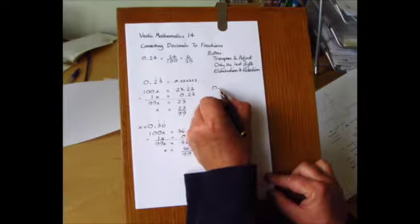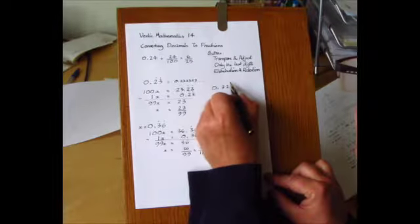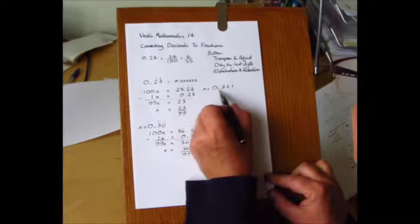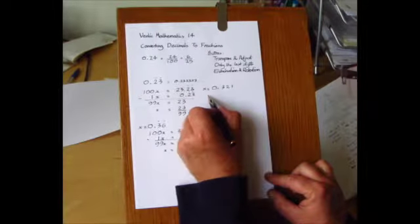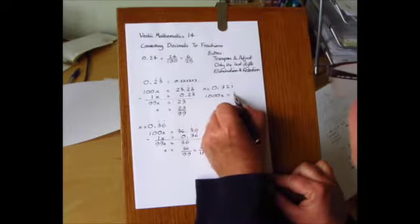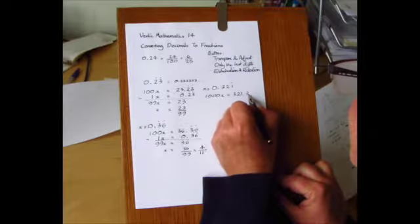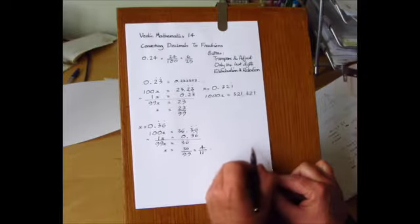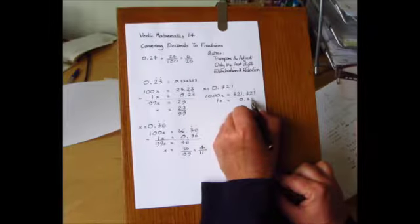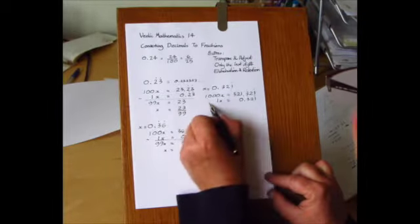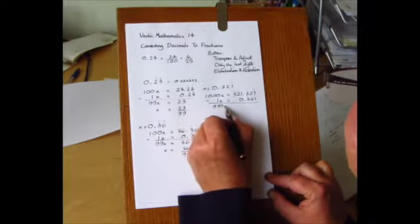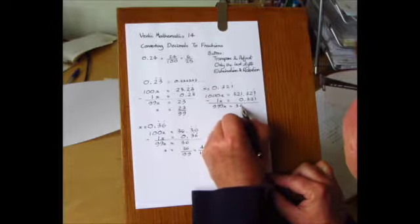For the next example, when the number of digits increases, let's have a look at 0.321 recurring. Here we have three digits, so we multiply this by 1000, which has three zeros in it. So 1000X is equal to 321.321 recurring. Underneath we write down 1X with the decimal digits in line, and subtract. So that 999X is equal to 321.